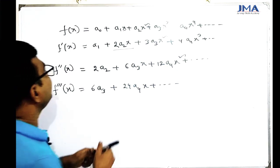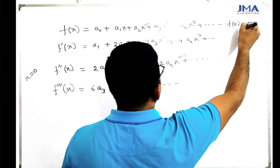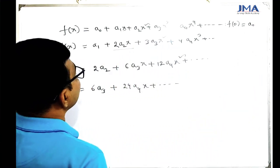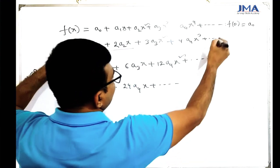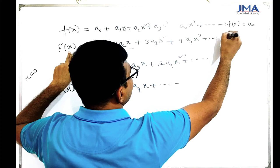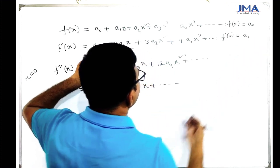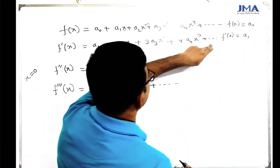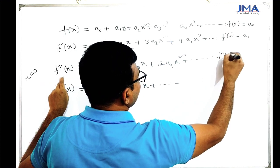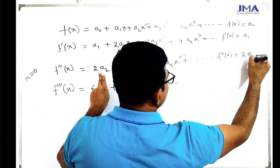So, I am going to write: F(0) is equal to A0. That gives us our first coefficient directly from substituting x equals 0 into the series.